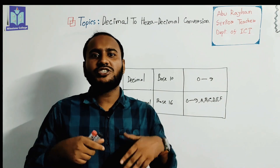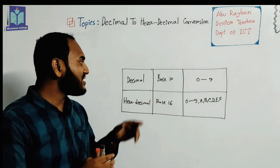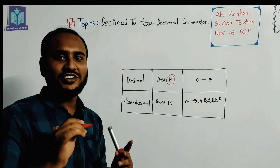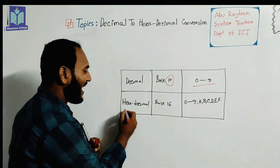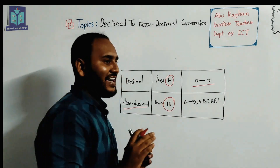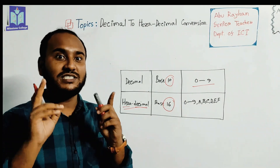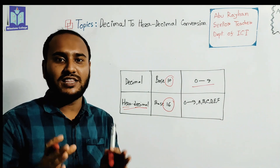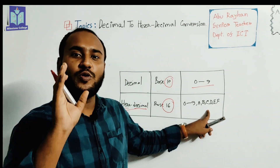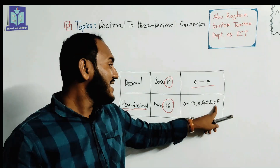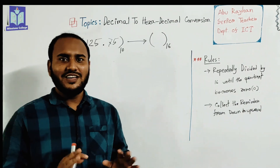Before we proceed, note the digits used in the decimal number system are 0 to 9 — there are 10 digits. The number is called hexadecimal whose base is 16, and there are 16 digits used in hexadecimal: 0 to 9, and A, B, C, D, E, F. Here A is used for 10, B for 11, C for 12, D for 13, E for 14, and F for 15, as you already know.